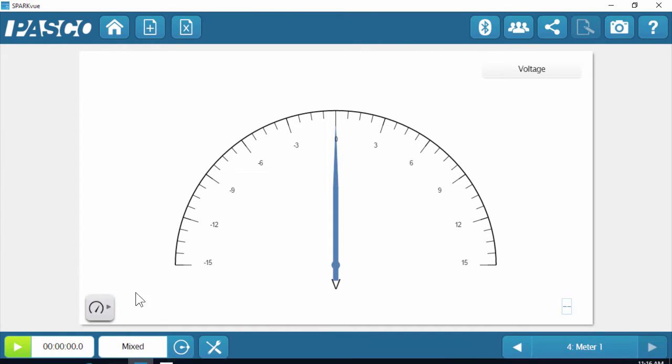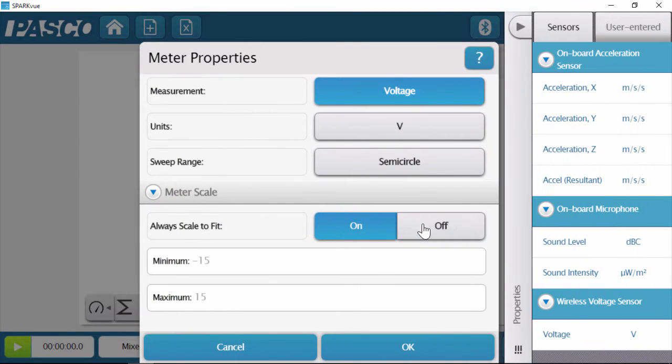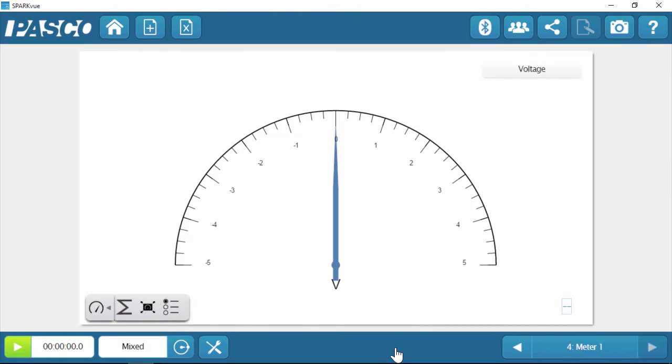Now to make this a little more usable in the video, I'm going to change my range of my voltage readings. I'm going to go in here, into my tools for that meter. I'm going to turn off auto scale to fit, and go from minus five to plus five volts. So now I'm ready.